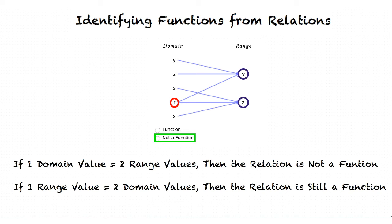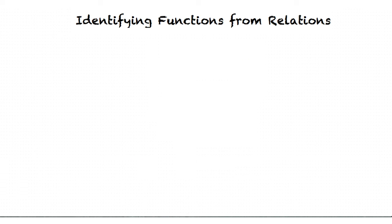Can we see an example of a relation that's considered a function? Of course, if we look at this relation, we can see that each value in the domain is attached to only one value in the range.